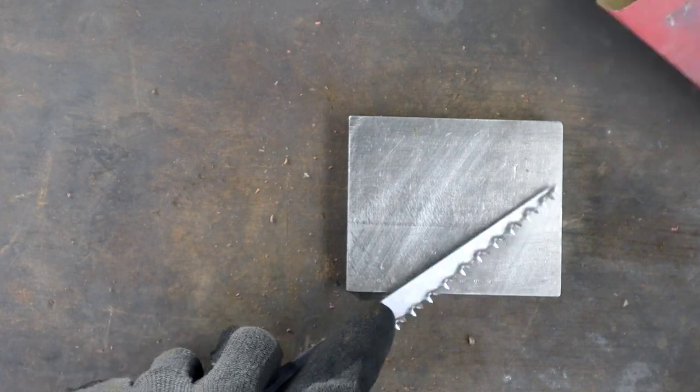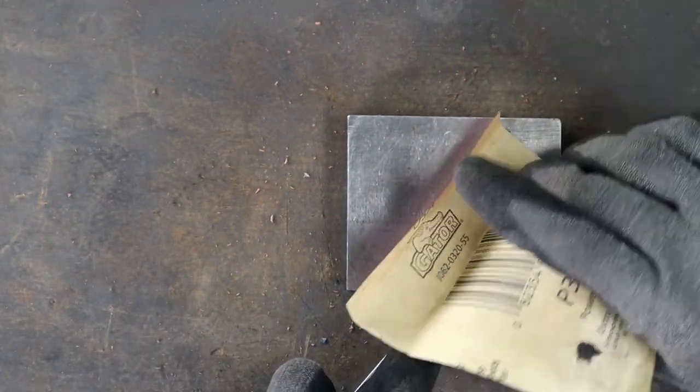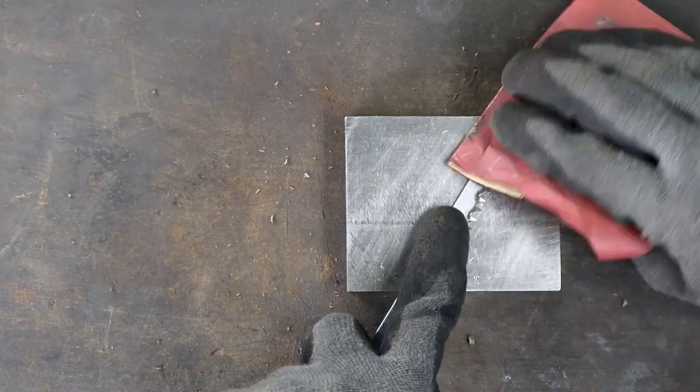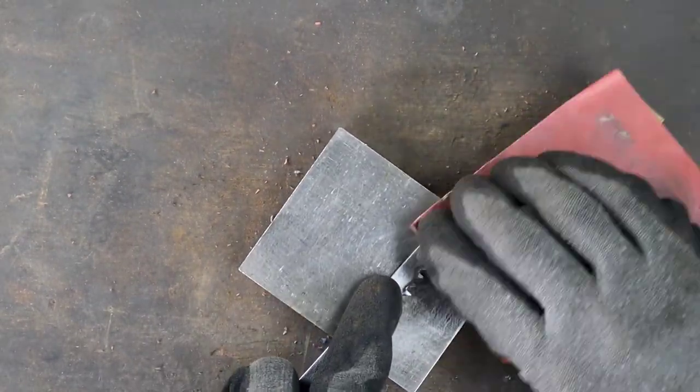You need to remember that the teeth are going in two different directions here and you're going to need to individually sand the ones that are going away from you. After you finish, switch to a 220 grit to give it a cleaner look.